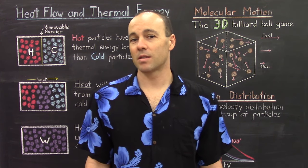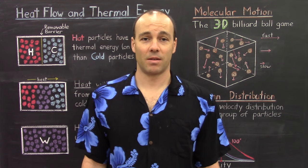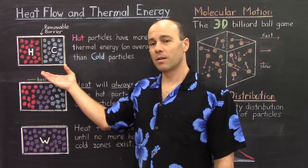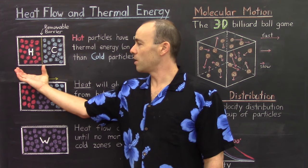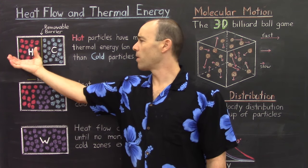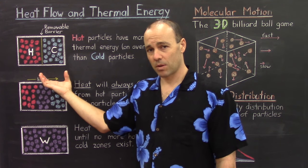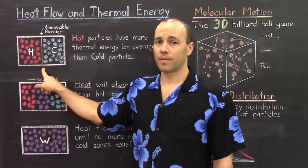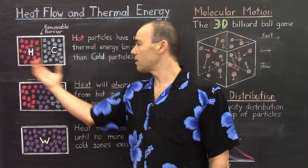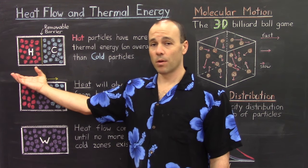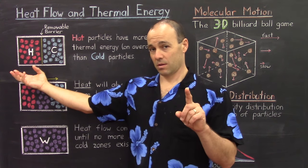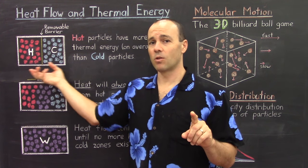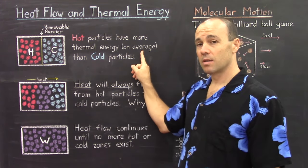Let's take a closer look at heat flow, and I think we'll begin to understand how a liquid can evaporate at room temperature. This diagram right here has particles on the left at a hot temperature, and particles on the right at a colder temperature. These particles are separated from one another by a removable barrier. The high temperature particles have more thermal energy, on average, than the cold particles do, and that simply means they have more molecular motion than the cold particles do.